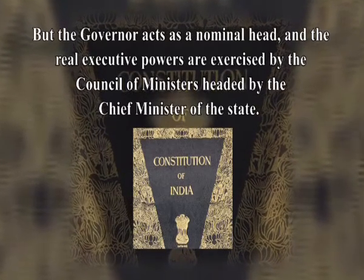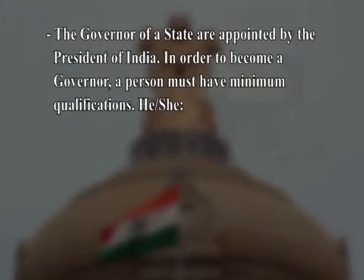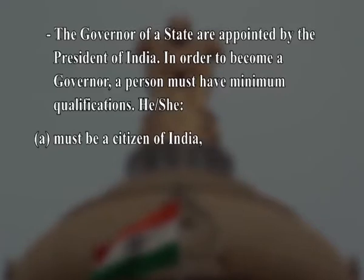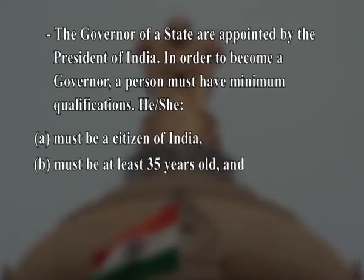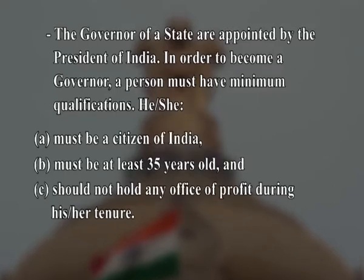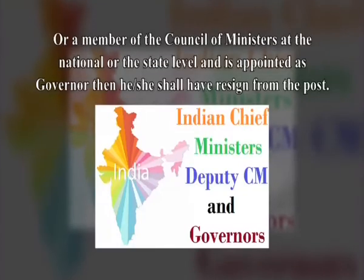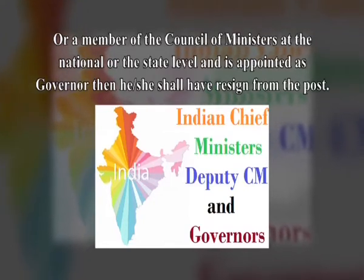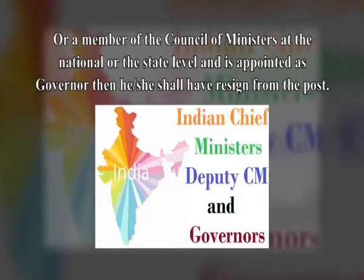The council of ministers is headed by the chief minister of the state. The governors of states are appointed by the president of India. In order to become a governor, a person must have minimum qualifications: he or she must be a citizen of India, must be at least 35 years old, and should not hold any office of profit during his or her tenure. If a person is a member of either house of parliament or the legislature of a state, or a member of the council of ministers at the national or state level and is appointed as governor, then he or she shall have resigned from that post.